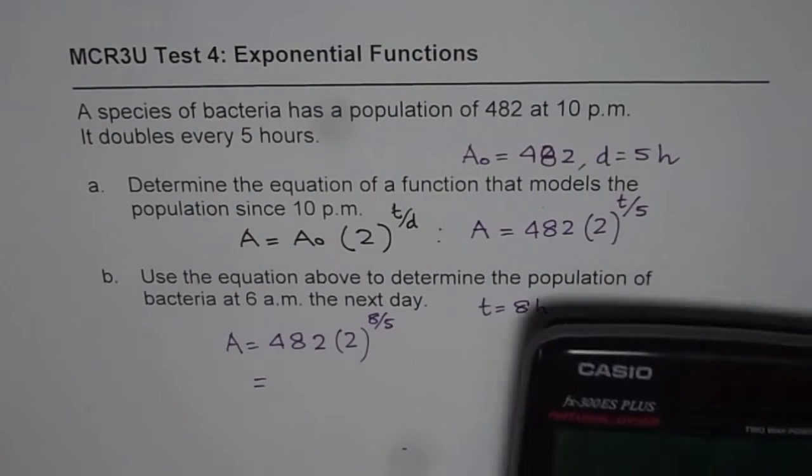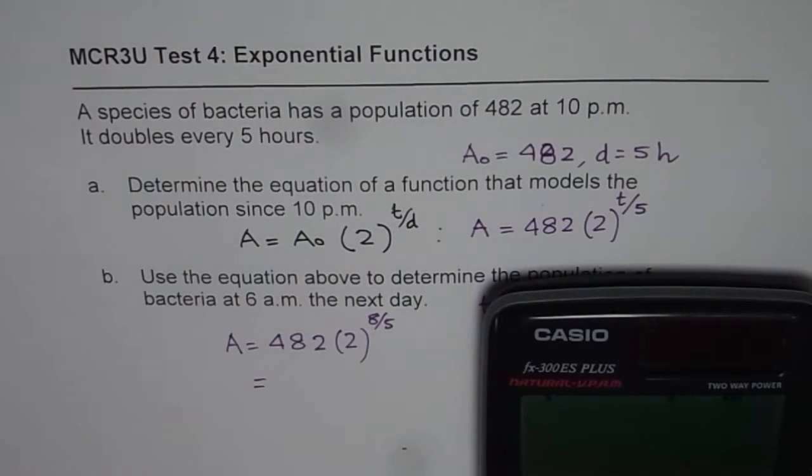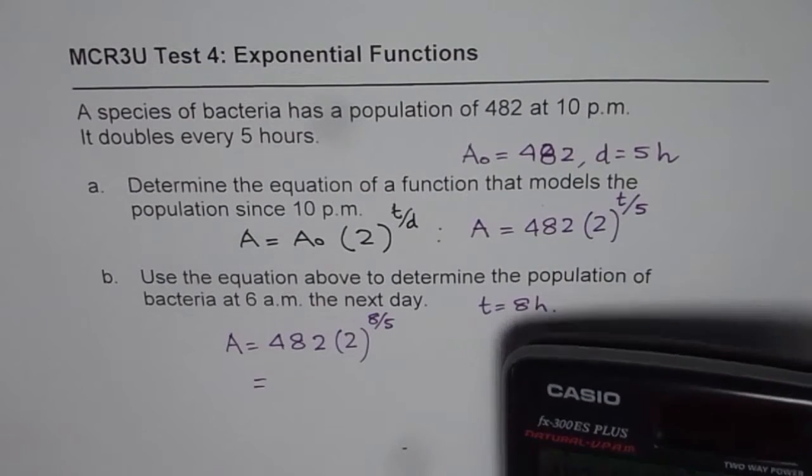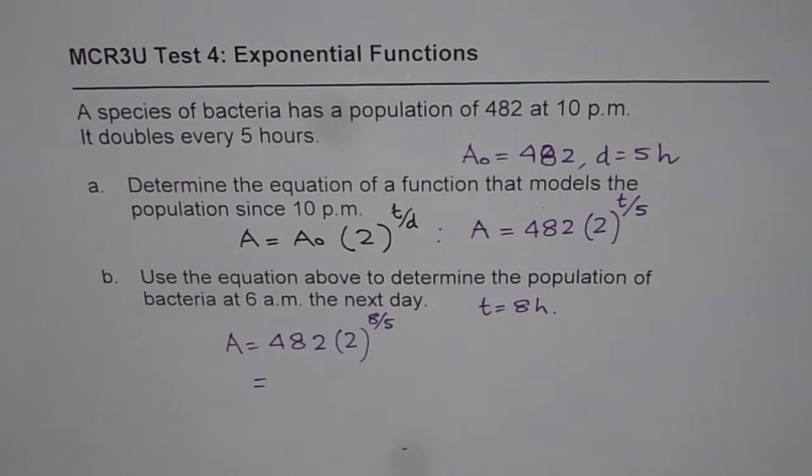So we have 482, within bracket 2, exponent, better to put it in brackets, 8 divided by 5, bracket close, equal to, so it gives us 1461.15.